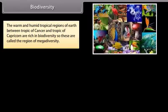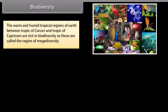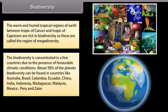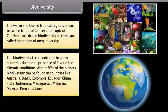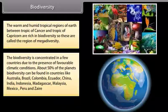The warm and humid tropical regions of earth between the Tropic of Cancer and the Tropic of Capricorn are rich in biodiversity, so these are called the region of mega diversity. The biodiversity is concentrated in a few countries due to the presence of favourable climatic conditions. About 50% of the planet's biodiversity can be found in countries like Australia, Brazil, Colombia, Ecuador, China, India, Indonesia, Madagascar, Malaysia, Mexico, Peru, and Zaire.